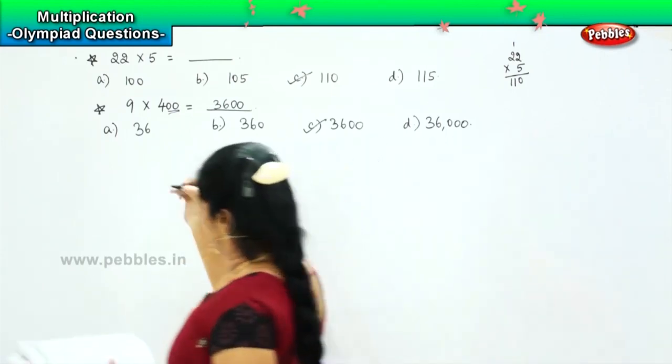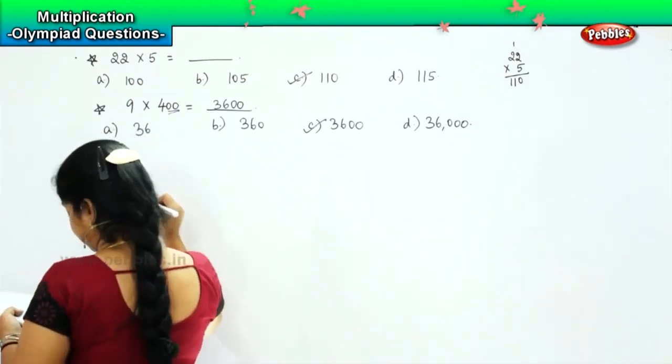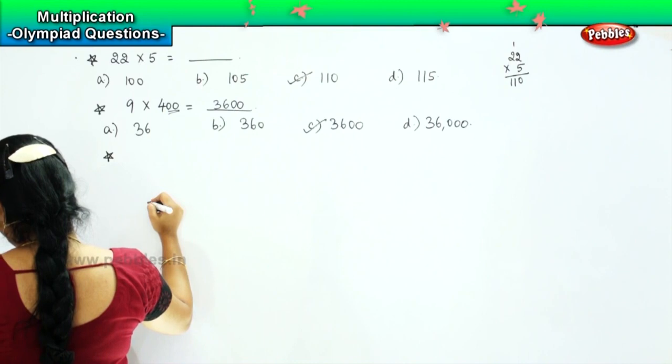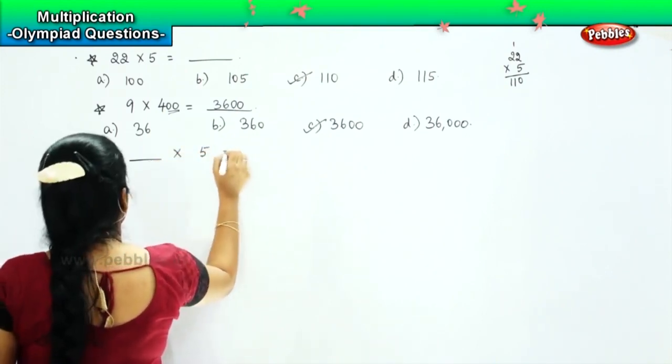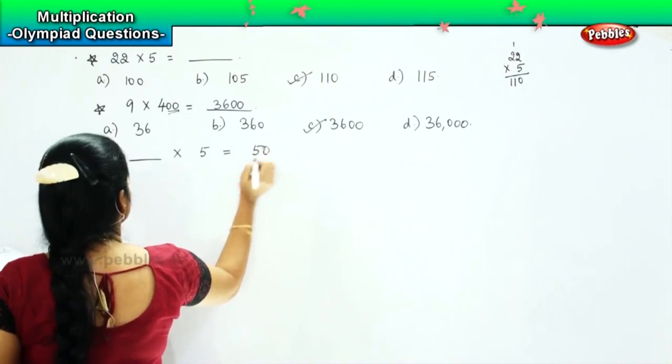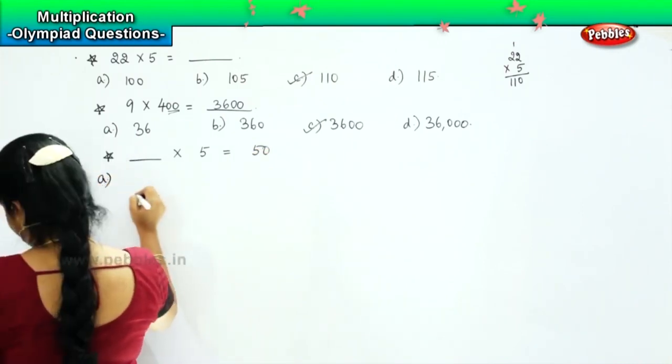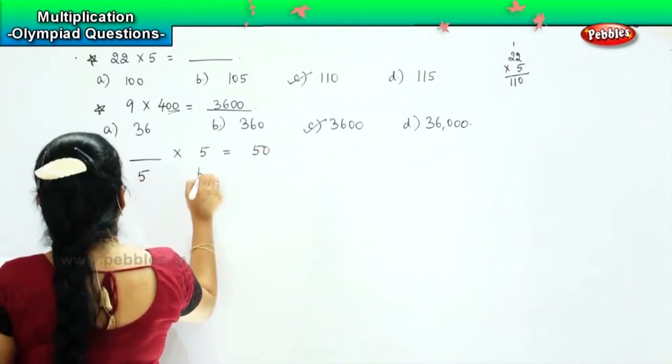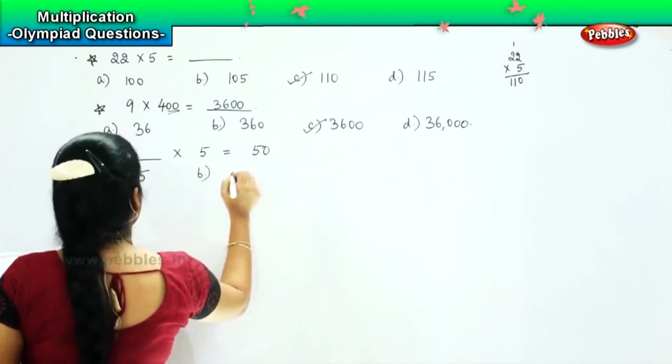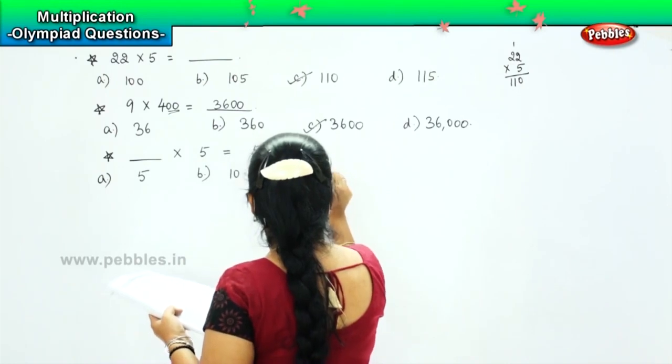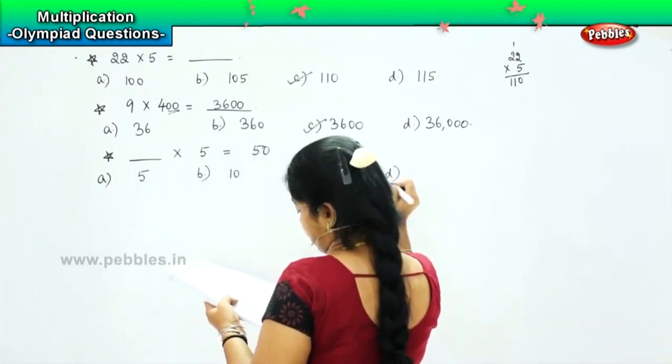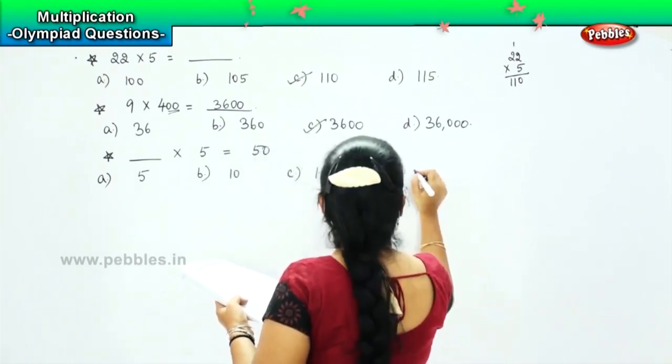The next question for you is dash into 5 is equals to 50, and your options are 5, option B is 10, option C is 15 and option D is 20.